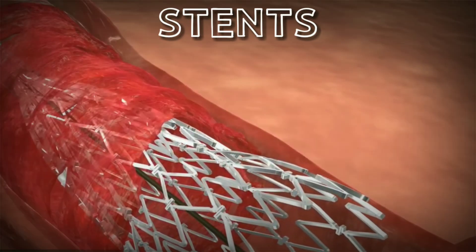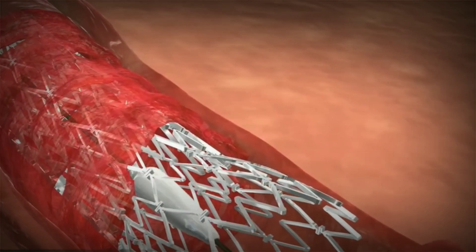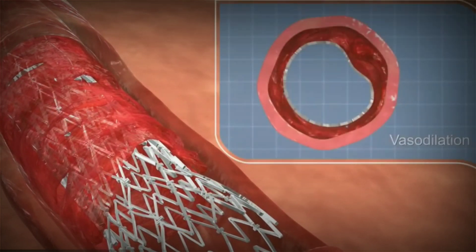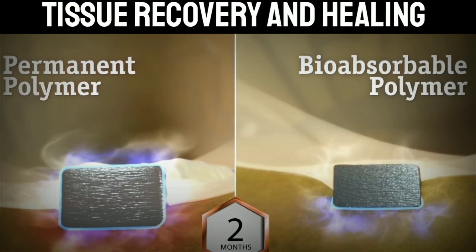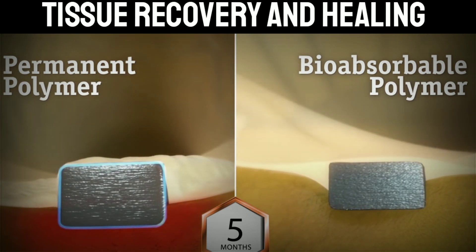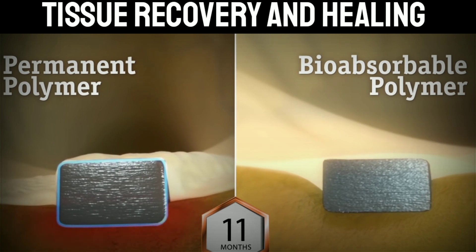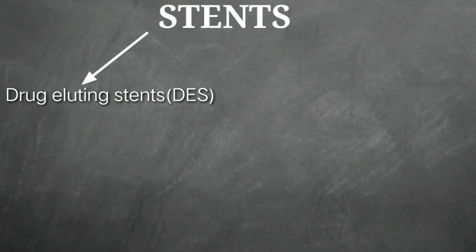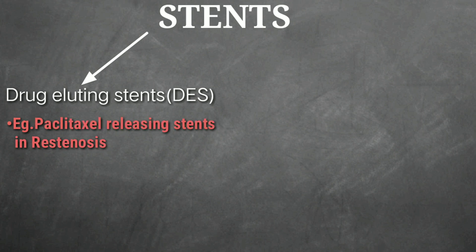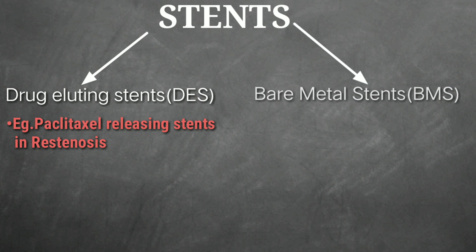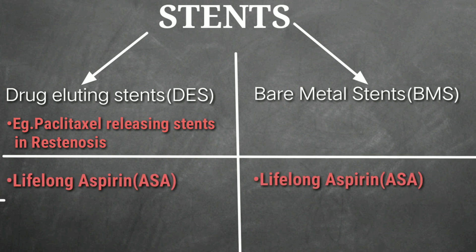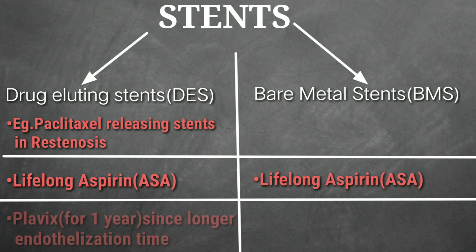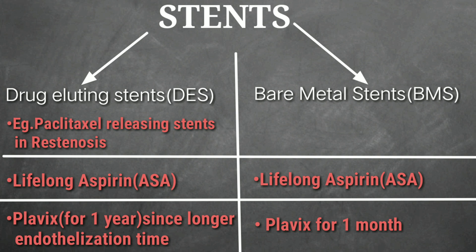Coronary stents are now used in nearly all angioplasty procedures. A stent is a tiny expandable mesh coil placed in newly opened areas of the artery to help keep the artery from narrowing or closing. Once placed, tissue will start to coat the stent like a layer of skin, and the stent will be fully covered within 3 to 12 months. Most stents are coated with medicine to prevent scar tissue from forming inside the stent — these are called DES or drug eluting stents. Some stents without this coating are called BMS or bare metal stents; they may have a higher rate of stenosis but do not require long-term antiplatelet medicine, and may be preferred in patients at higher risk of bleeding.